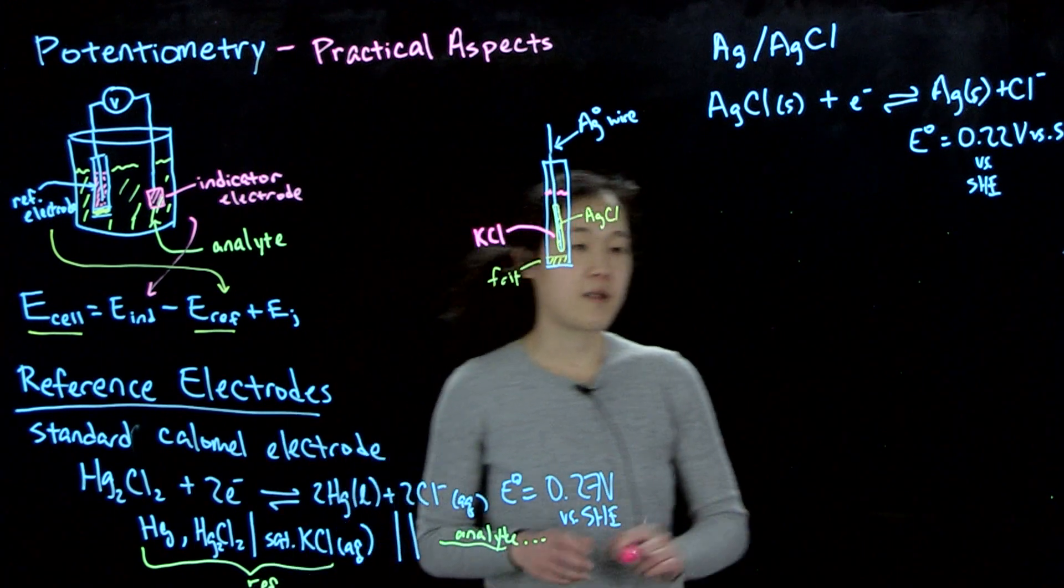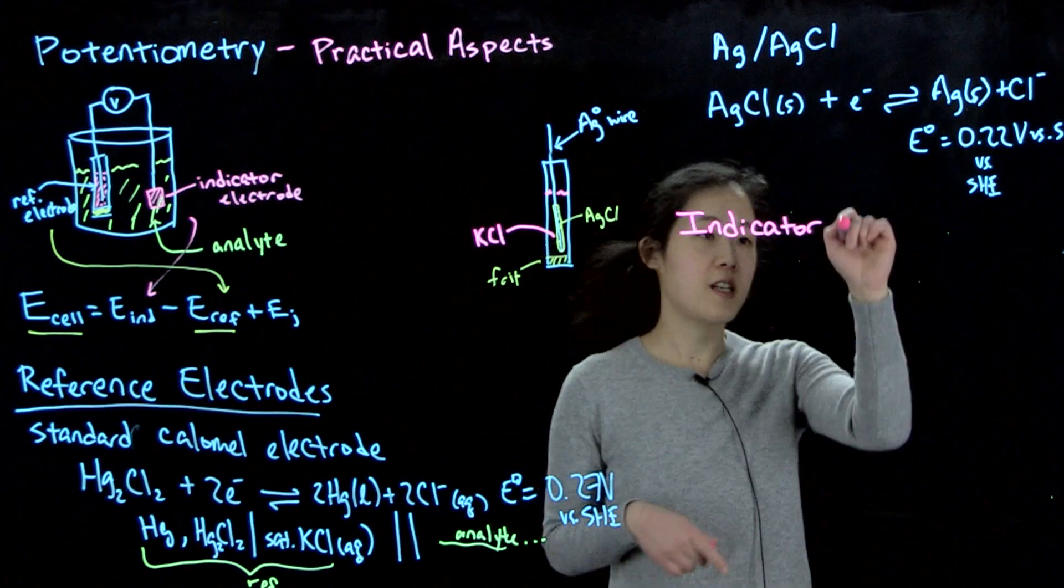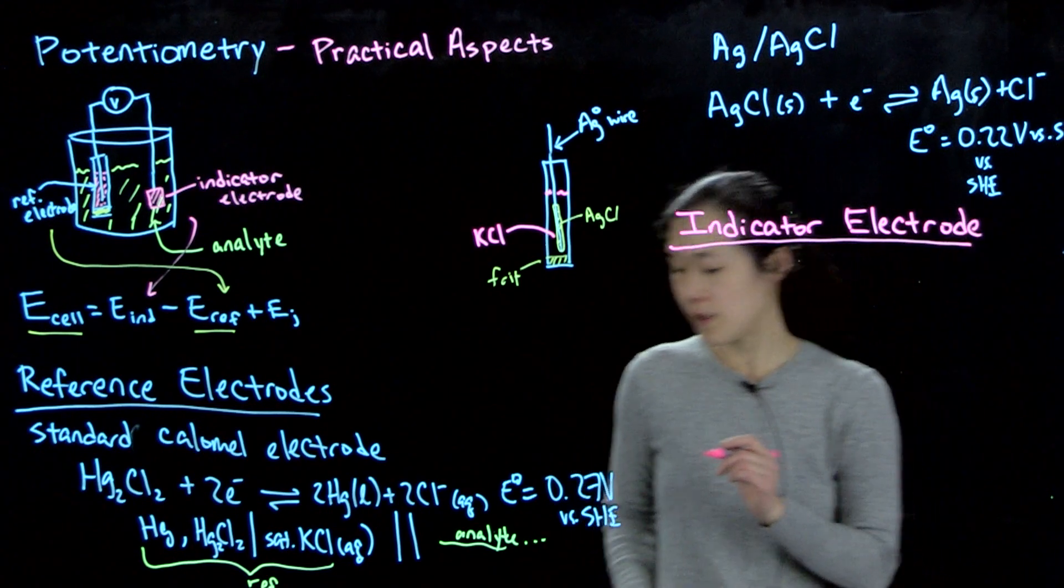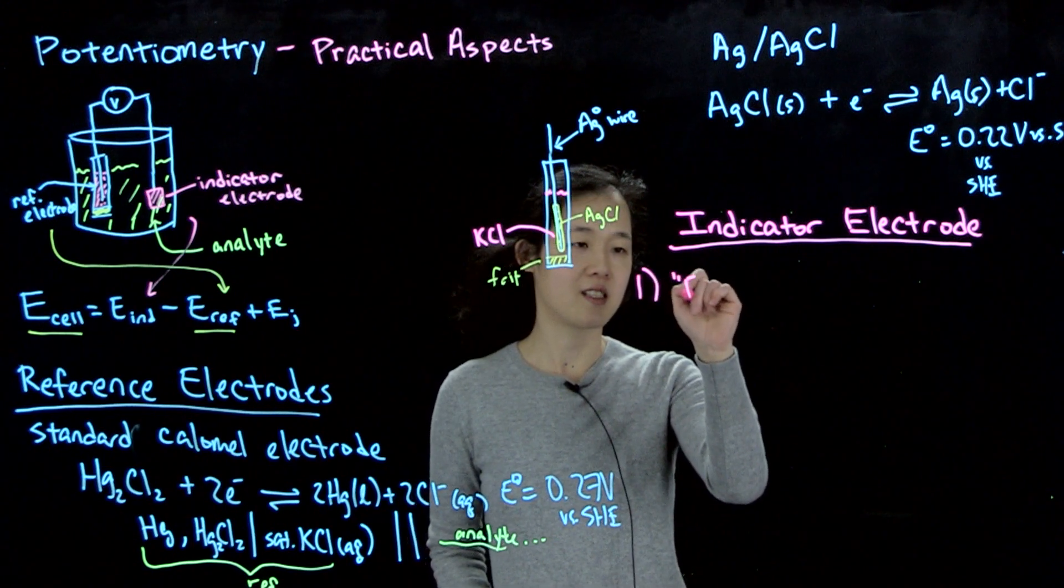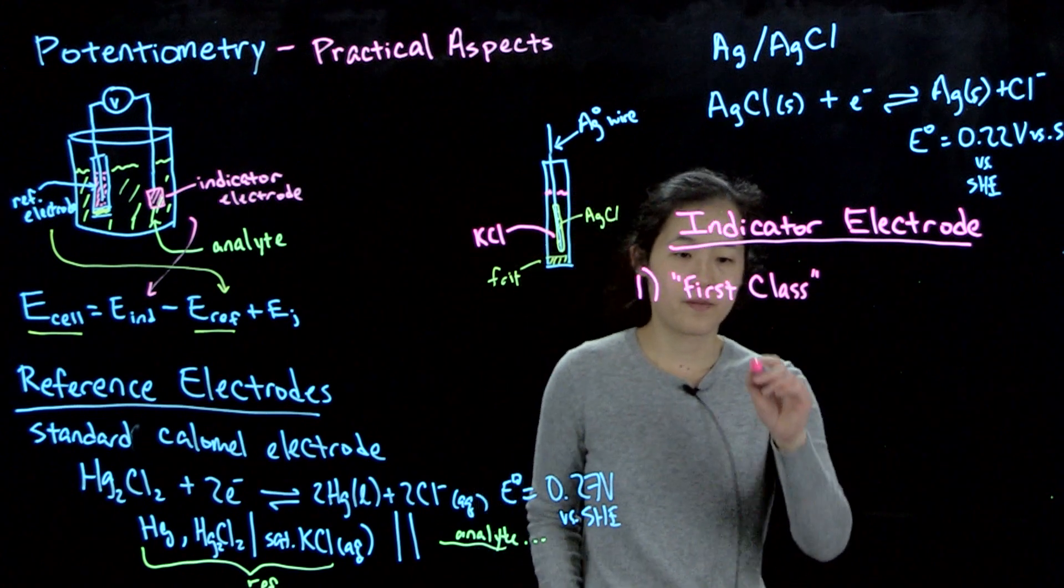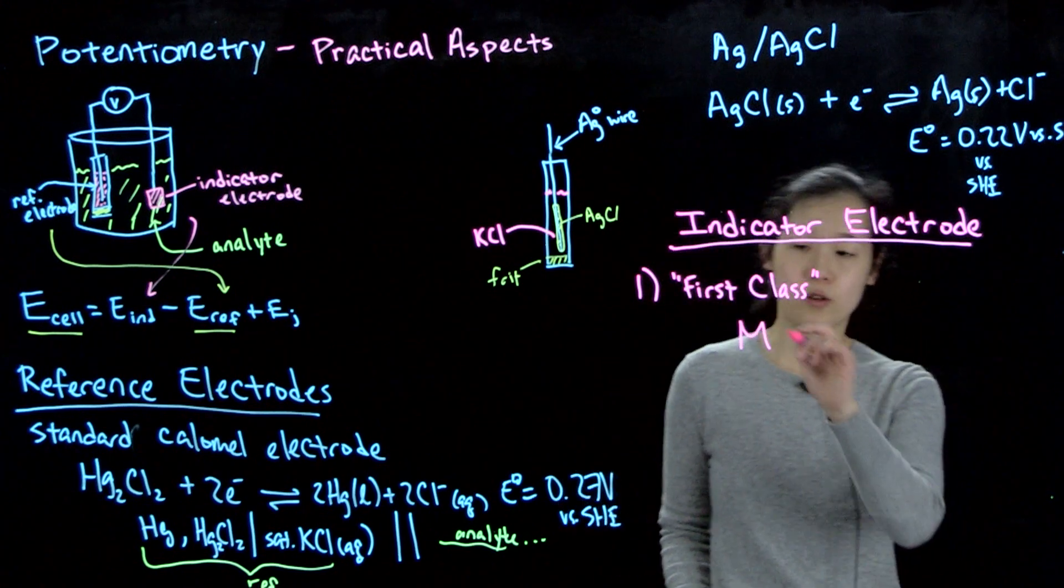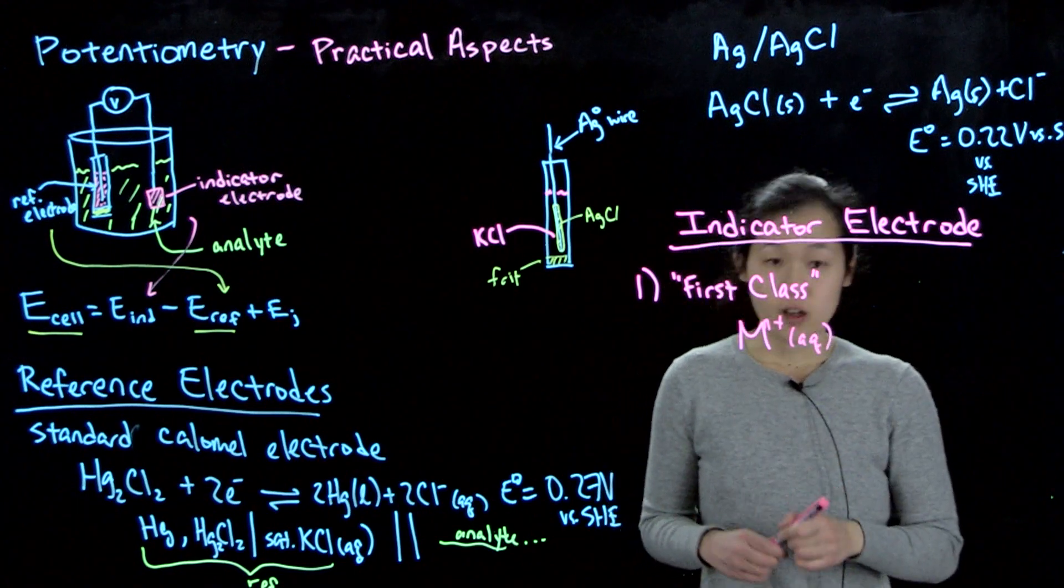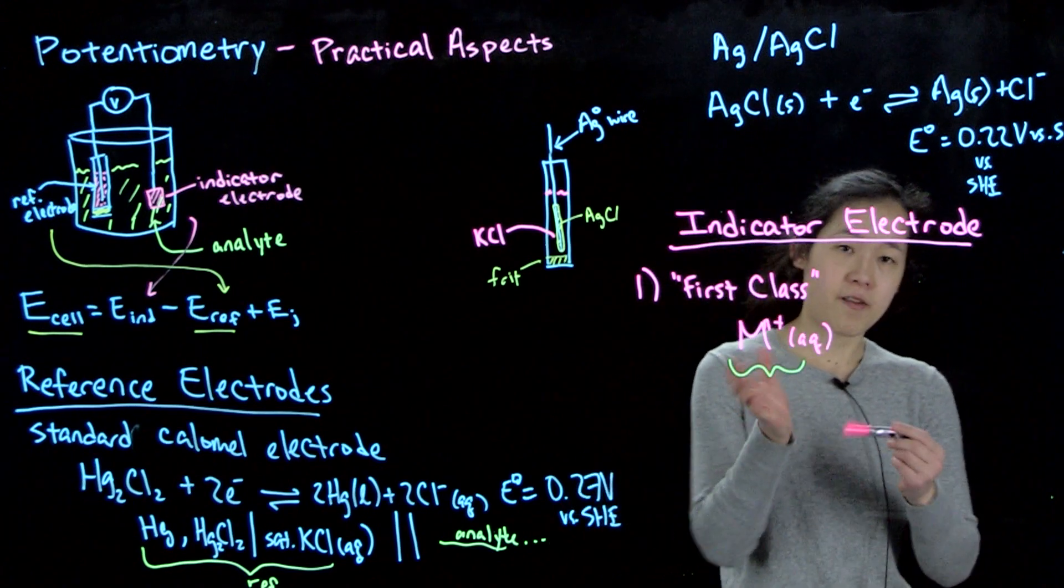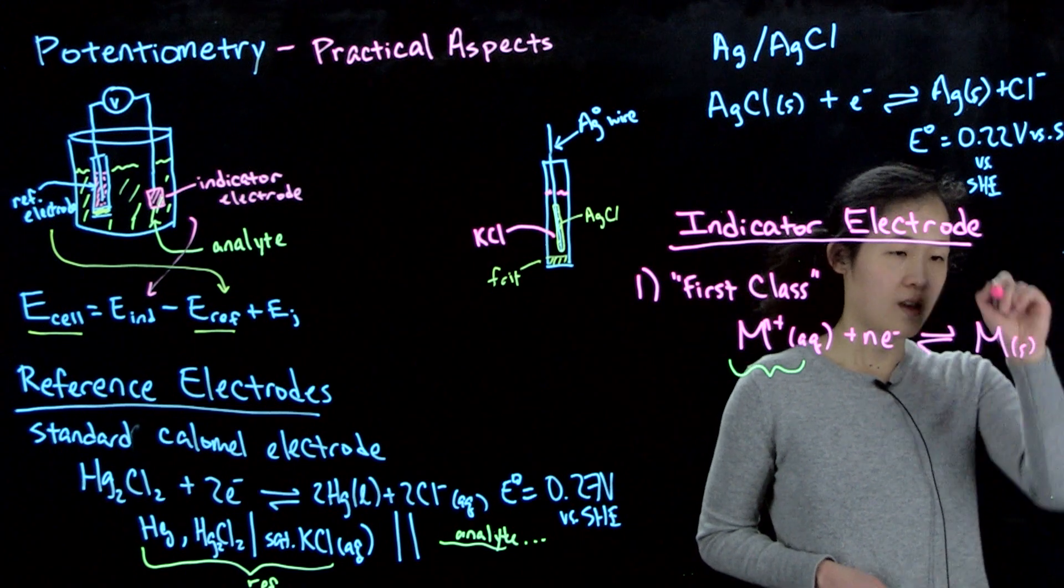For the indicator electrodes, we can talk about that. So this is the one that really matters. And the indicator electrode, what it is, will depend on what you're trying to measure. So the so-called first class indicator electrode, so first class, or you might see it called the first kind. If you have some sort of metal, so if your indicator electrode is made of a metal, then it will be a good way to measure the concentration of metal plus or metal n plus ions in solution.